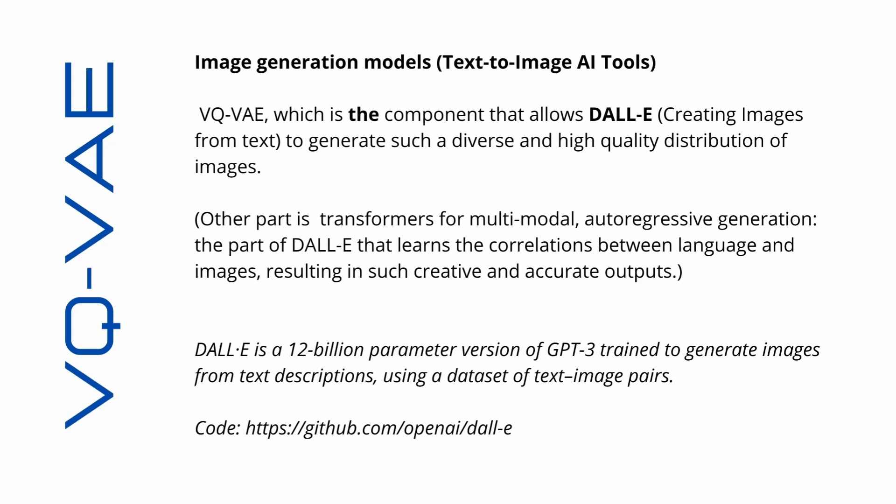In 2020, DALL-E created images from text, and our VQ-VAE was the main component that allowed DALL-E to generate those pictures. The other part is the transformer model for multimodal autoregressive generation and the correlations between language and images. DALL-E was a 12 billion parameter version of GPT-3 trained to generate images from text descriptions using a dataset of text-image pairs.